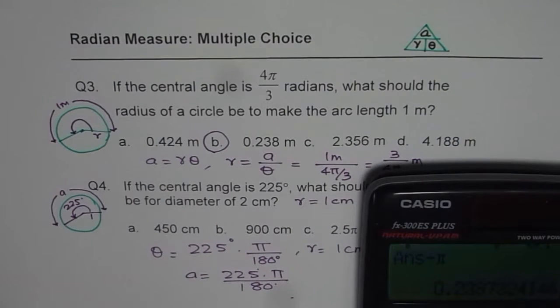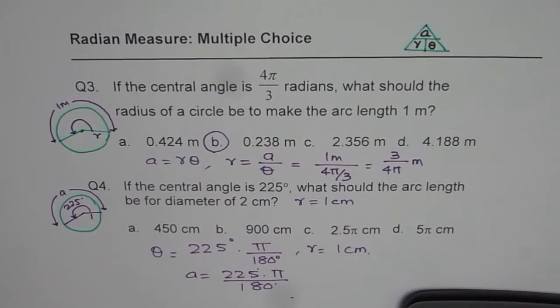So let us find this answer. So it is 225 divided by 180 equals to times pi, which is equal to 5 by 4 pi.